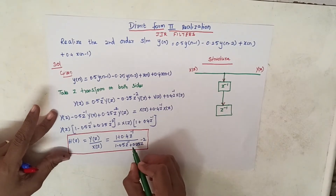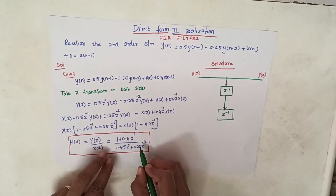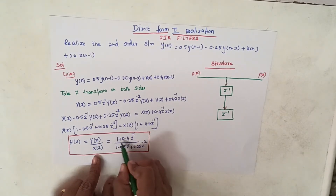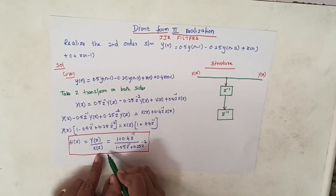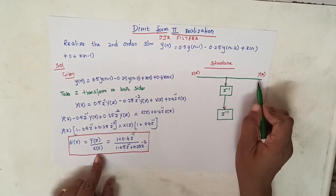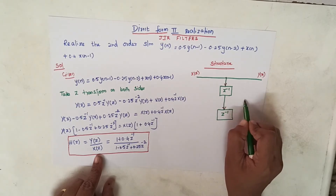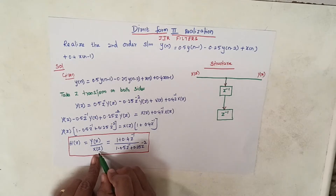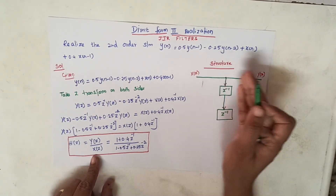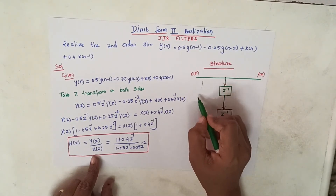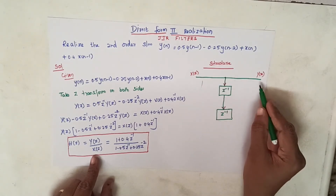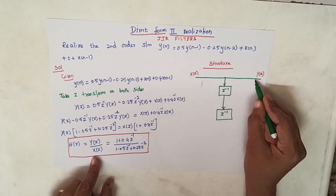Looking into the transfer function equation: all numerator coefficients can be represented on the output Y(z) side, and all denominator coefficients can be represented on the input X(z) side. The important difference is that while representing the denominator coefficients on the input side, we must change their sign.